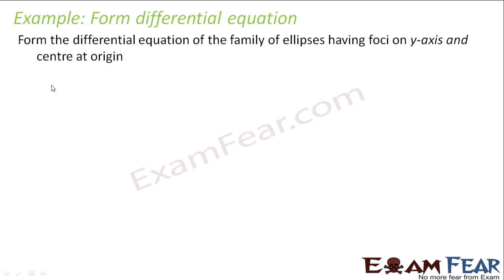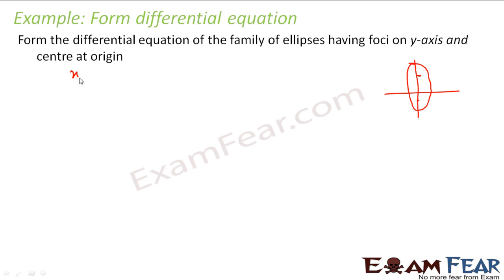We have to find the equation of the family of ellipses having foci on the y-axis and center at the origin. The foci are on the y-axis, so the equation is of the form x²/b² + y²/a² = 1, where a is the semi-major axis along y and b is the semi-minor axis.